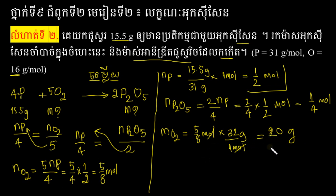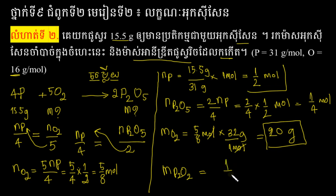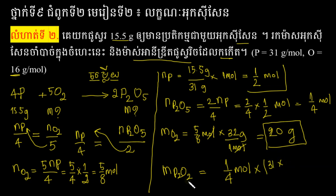There is a gram of oxygen to the oxygen, and then the oxygen is used. It's used to use the oxygen, water, and oil. The oxygen is used to use the oxygen, and it's a small amount of oxygen.